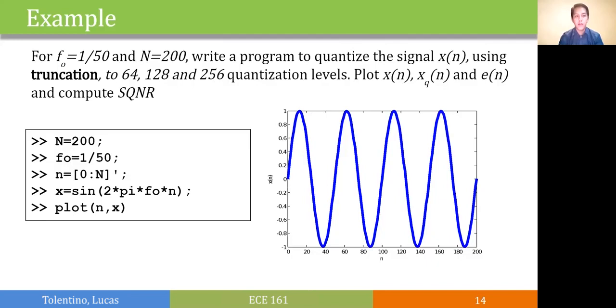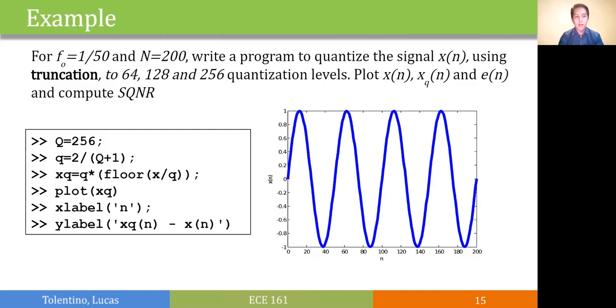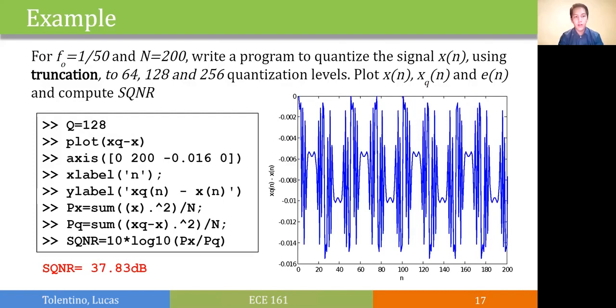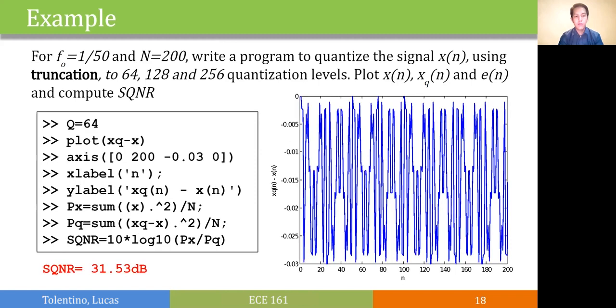For 256 and using truncation, we can achieve 43.56 decibels of SQNR. Comparing that with 128 levels, we got lower SQNR at 37.83. And at 64 quantization levels, we have a low SQNR of 31.53 decibels. So going from 256 to 64 gives you a total loss of around 12 decibels, which is a pretty high decrease in SNR.